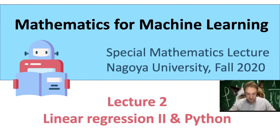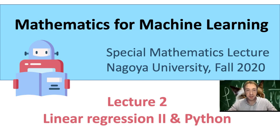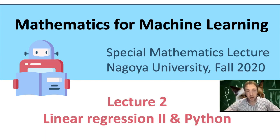Welcome to the second lecture. Today we want to continue talking about linear regression, do an explicit example in Python implementing gradient descent, and also talk a little bit about linear algebra to see how we can solve linear regression using linear algebra without gradient descent.